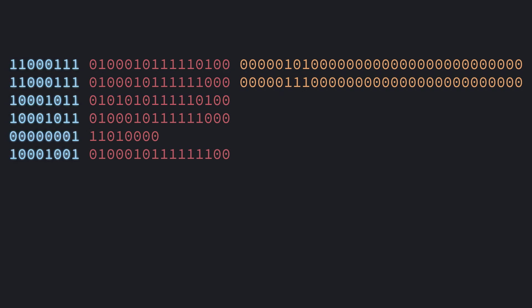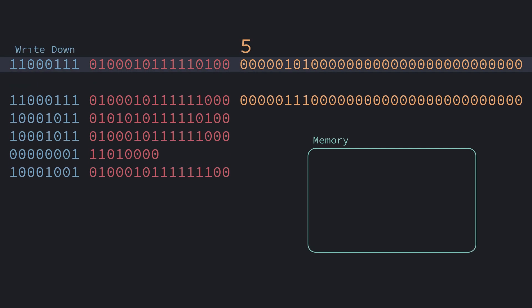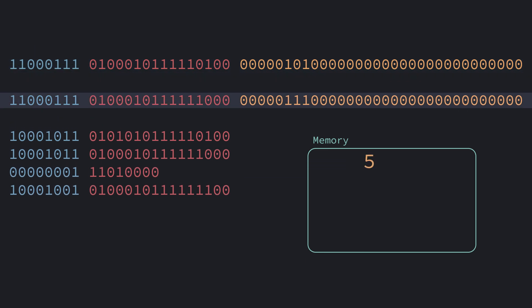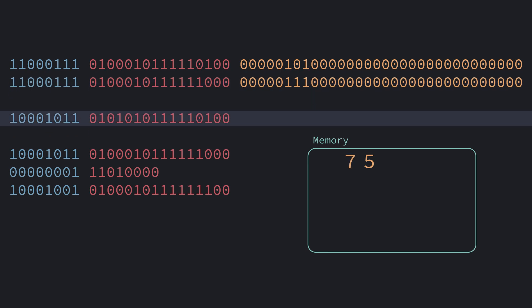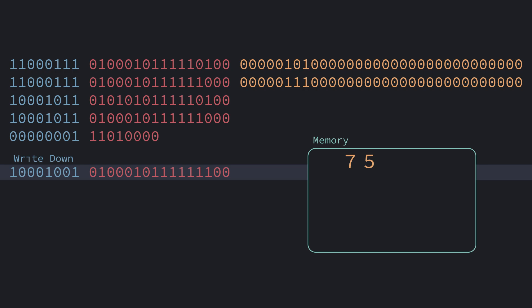The blue chunks tell the computer what to do, the red is where to do it, and the orange are just numbers. Imagine the computer has a scratch pad to remember things. We'll call it its memory. First, this chunk says write down the number 5 on the piece of paper. And right beside the number 5, write down the number 7. Then take the 5 we wrote down, take the 7 we wrote down, and add them together. Then write down the answer beside the other numbers. That's it.